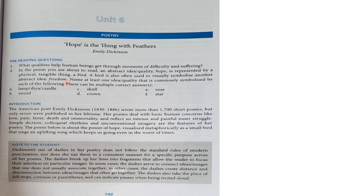To begin with, there are some pre-reading questions. I always ask you to go through the pre-reading questions — this is entry-level behavior. So: what qualities help human beings get through moments of difficulty and suffering? I think there is no human being without these moments of difficulty and suffering. How do we console ourselves, and what actually happens to us when we really feel adversity in our life? This is the American poet Emily Dickinson, belonging to the 19th century, who wrote more than 1700 short poems.